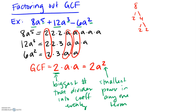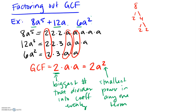The powers on a are 5, 3, and 2 — the smallest is 2, so a squared comes out. If a variable like b only appeared in one term, its smallest power would be zero and it shouldn't appear in the GCF. Now that we have our GCF of 2a squared, we can divide it out. We've covered division of polynomials by a monomial, and that's essentially what we're doing here.